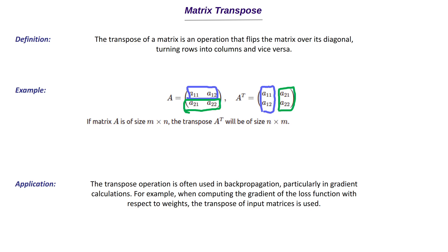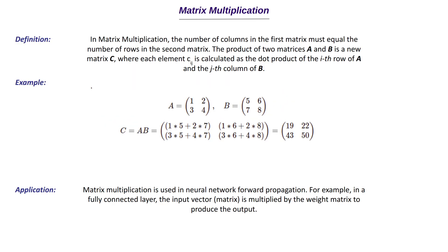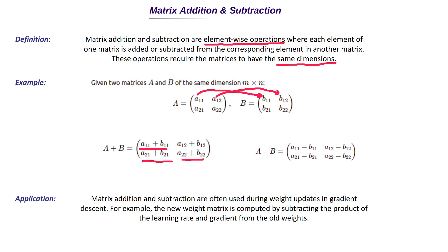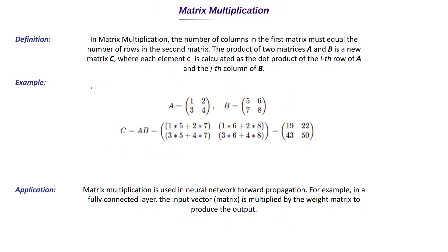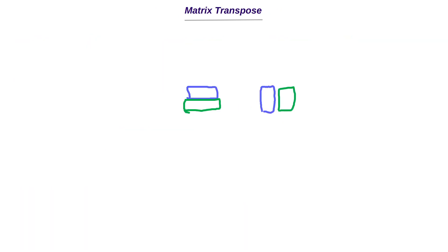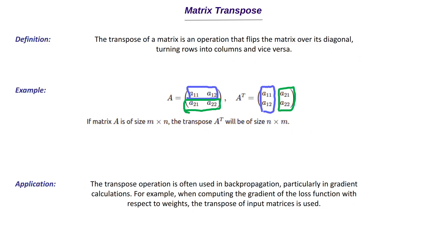These are the applications of the operations. The key takeaway is to understand these basic operations — they are not complex, you likely studied them in school. Matrix addition and subtraction are element-wise, multiplication involves rows and columns with those dot product calculations, and transpose flips rows into columns. I hope everyone is clear about the concepts discussed today. That's all from my side — thanks for watching, I'll see you in the next video.